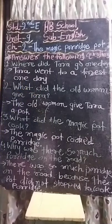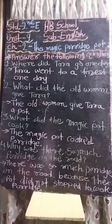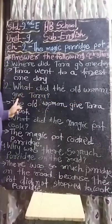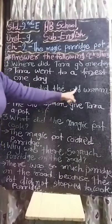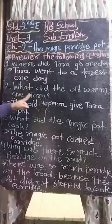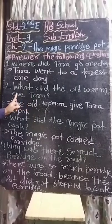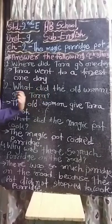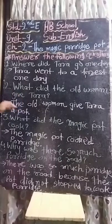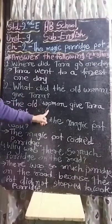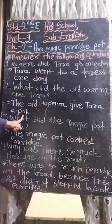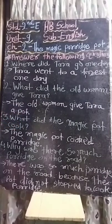Second one: What did the old woman give Tara? (Old woman ne Tara ko kya diya?) Answer: The old woman gave Tara a pot — a magic pot.